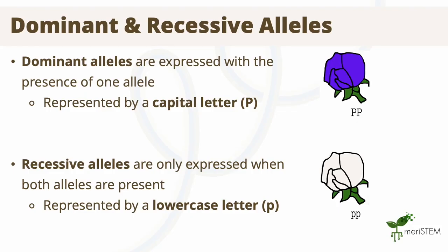At the time, Mendel referred to alleles as factors, and he wasn't sure about what was causing this dominant and recessive nature, as the discovery of DNA was still many years away. However, due to our current understanding of DNA, we can now conclude that dominant alleles are expressed if there is one allele present. These dominant alleles are represented by a capital letter — for the flower example, the dominant trait is expressed by a capital P. Recessive alleles are only expressed when there is no dominant allele present, represented by a lowercase letter, such as a lowercase p.